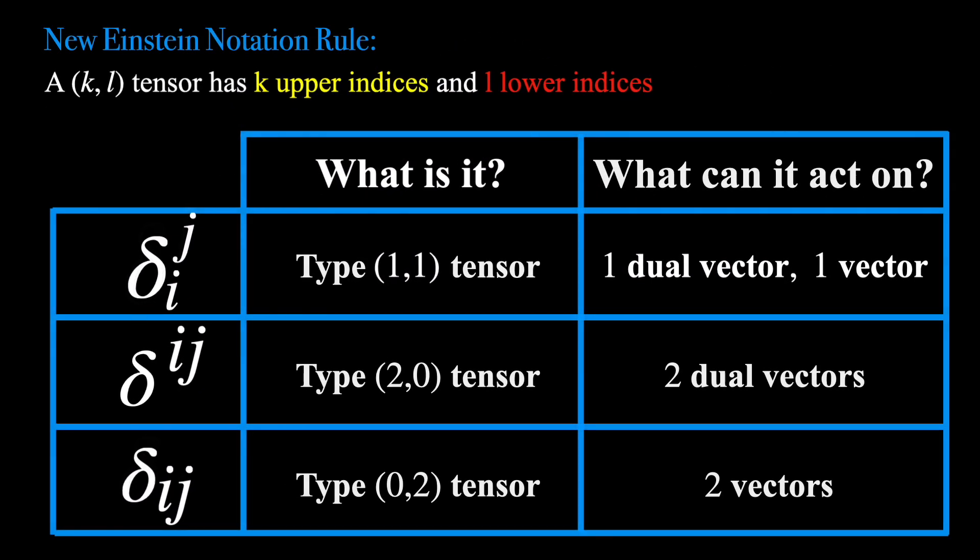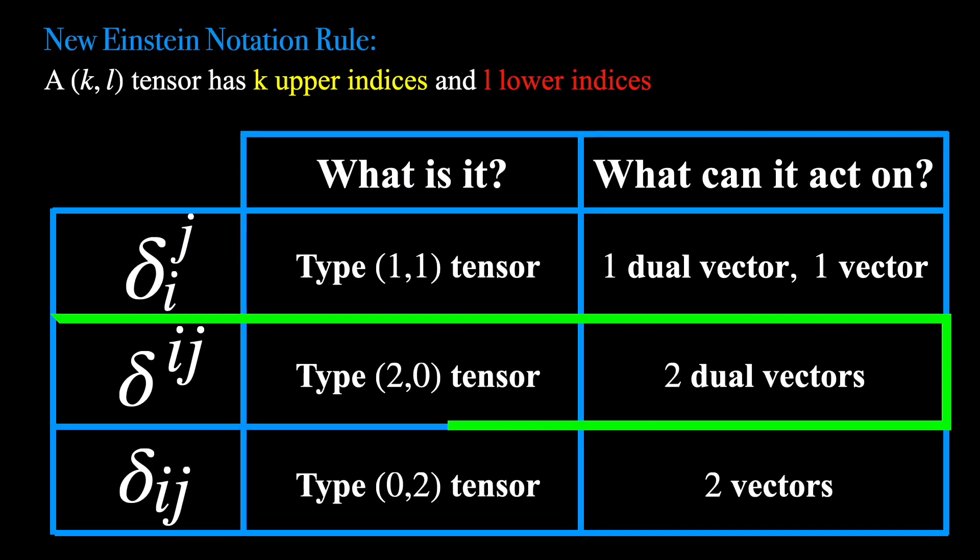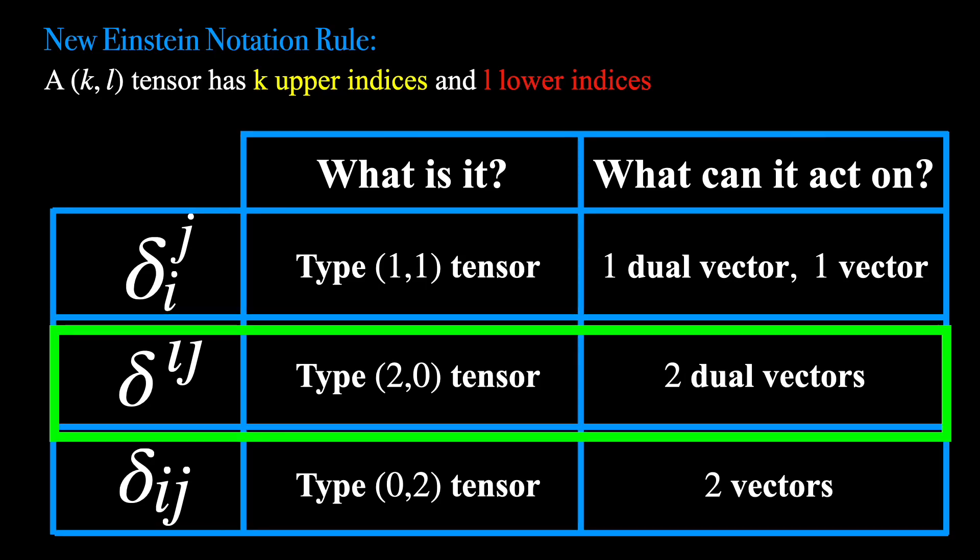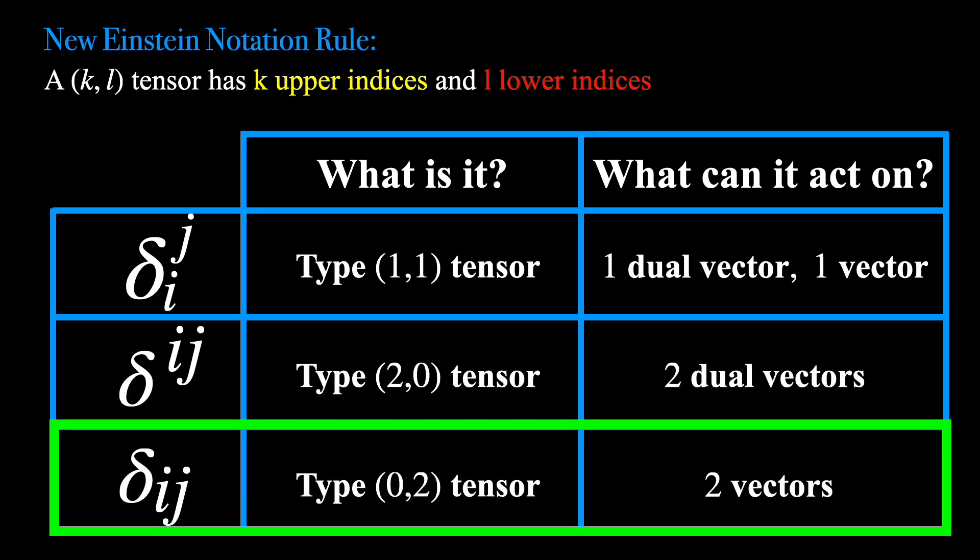So the Kronecker Delta with two upper indices is a type (2,0) tensor, and therefore it acts on two dual vectors. The form with two lower indices on the other hand is a type (0,2) tensor, which acts on two vectors.